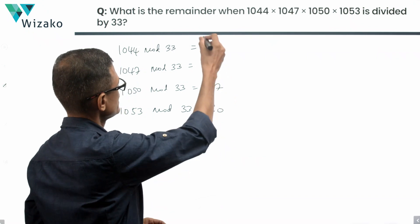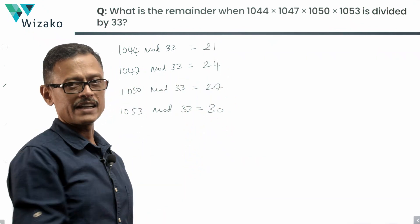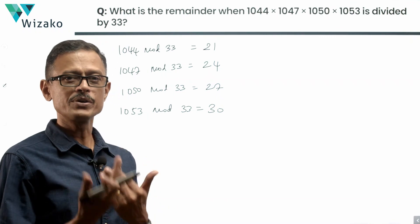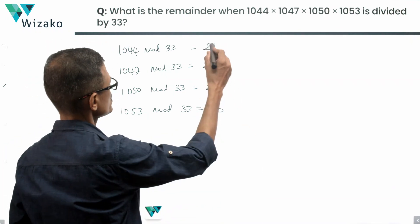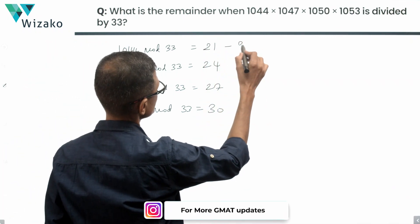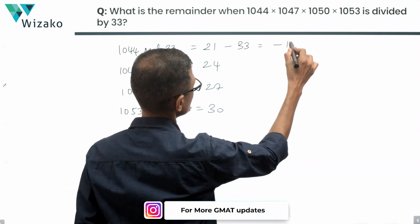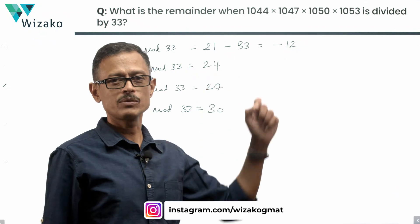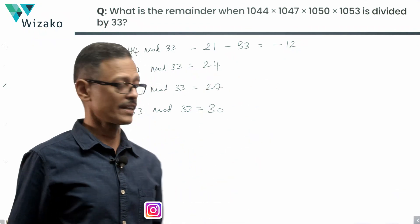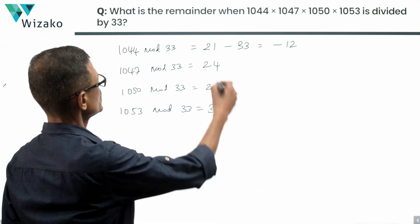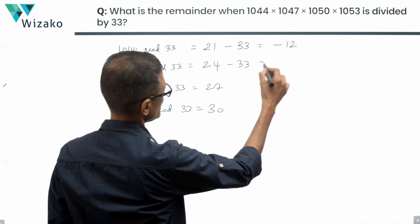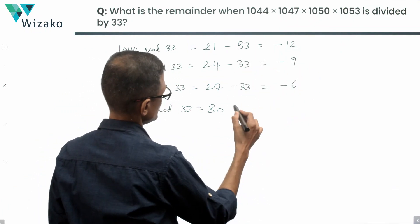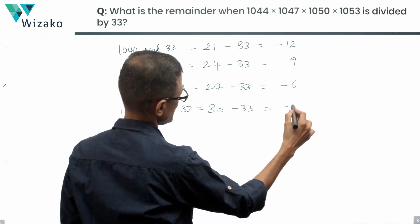To make the calculation easier, all of these numbers are the remainders when 33 divided this. We'll compute the equivalent negative remainder by picking the positive remainder and subtracting the divisor from it. The equivalent negative remainder is minus 12. 24 minus 33 is minus 9, 27 minus 33 is minus 6, and 30 minus 33 is minus 3.